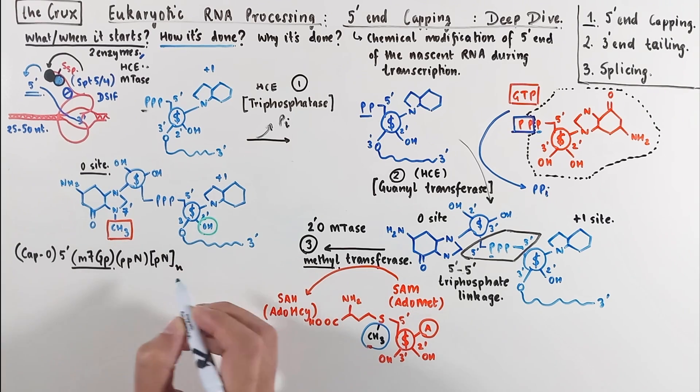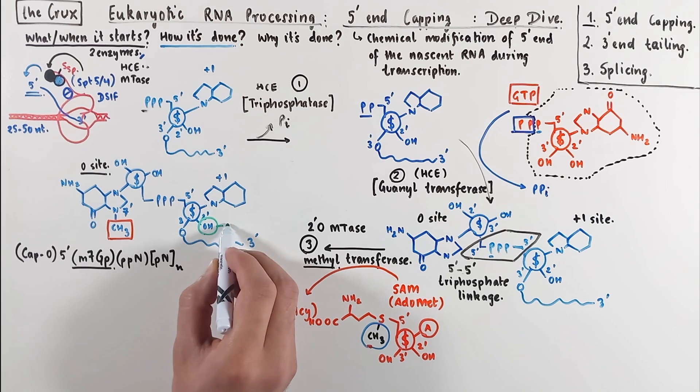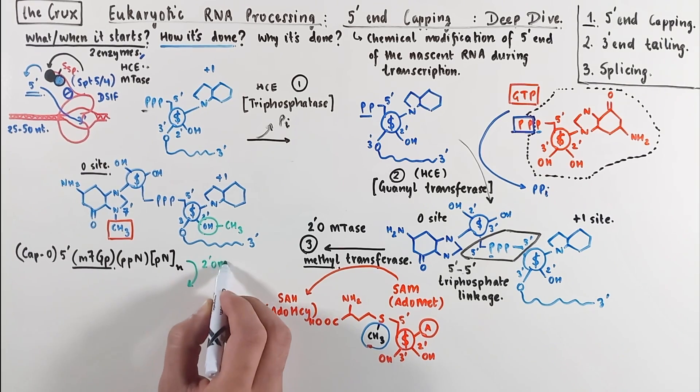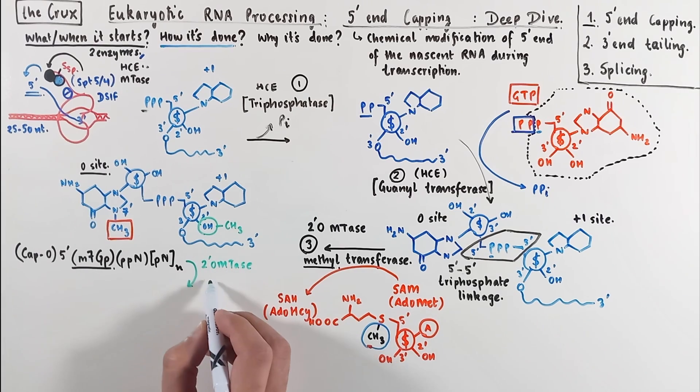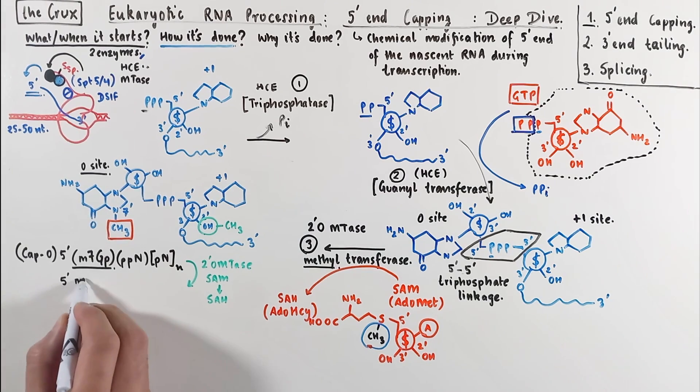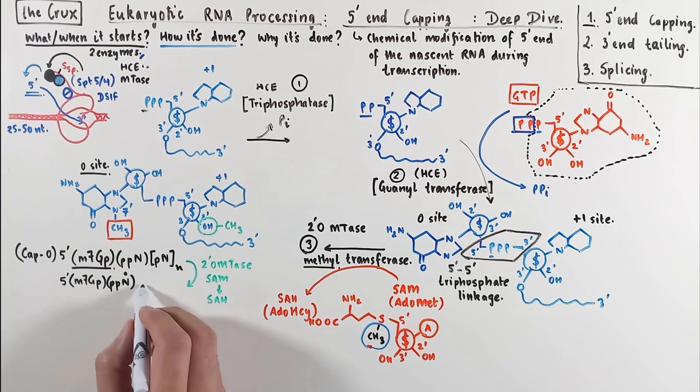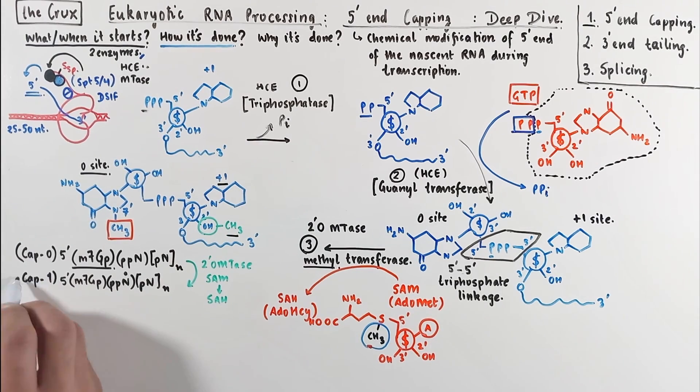Now sometimes a 2-oxymethyltransferase can transfer a methyl group to the hydroxyl on the second carbon of the plus 1 nucleotide on top of a cap 0 structure. And this reaction also takes an edomet as the substrate, and the reaction and the transfer of the methyl is quite the same. Now the notation for this sort of cap is the same as cap 0, except that the methyl is transferred in the plus 1 site as denoted by this dot. And we call this cap where both site 0 and plus 1 site are methylated, cap 1.